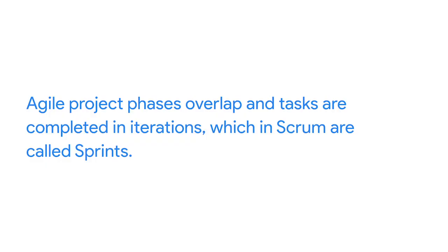However, rather than having to always go in order or wait for one phase to end before starting the next, Agile project phases overlap and tasks are completed in iterations, which in Scrum are called sprints. Scrum is a form of Agile that you'll learn more about in the course focused entirely on Agile. Sprints are short chunks of time, usually one to four weeks, where a team works together to focus on completing specific tasks.